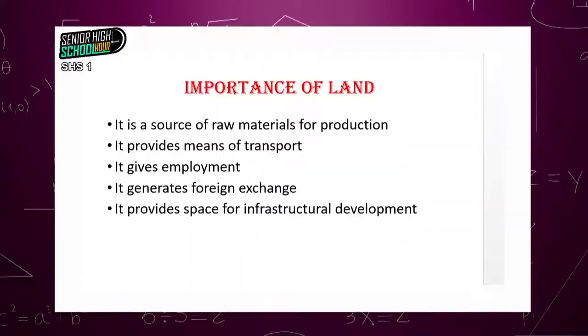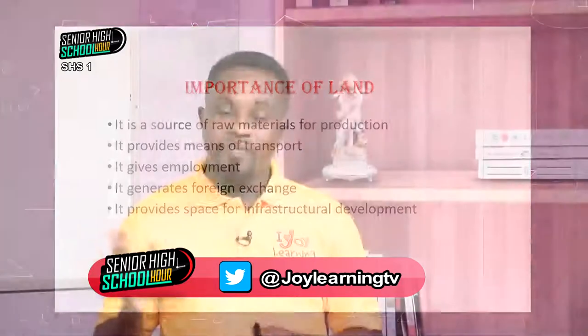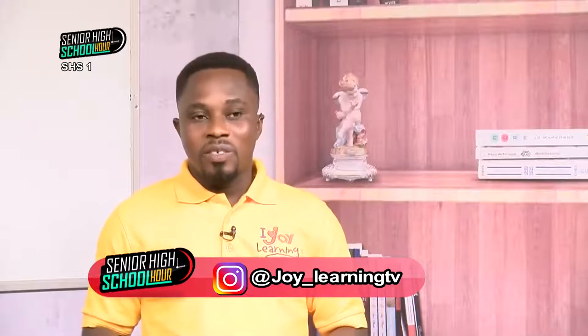Land provides means of transport. The means of transport available to us — road, rail, water, air — are all natural. By road, we mean we are using the bare land itself. By water, we use water bodies, which are also examples of land. By air, it is still natural. Even with rail, although the rail lines are man-made, they are on the land — without the land, transportation by rail would not be possible.